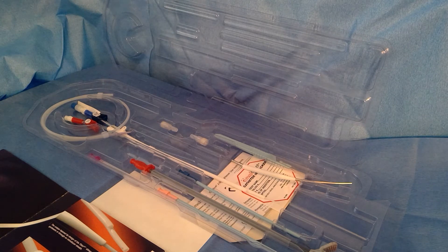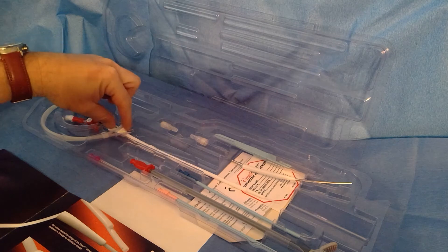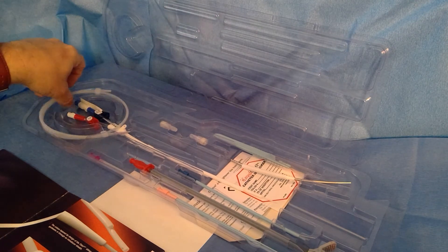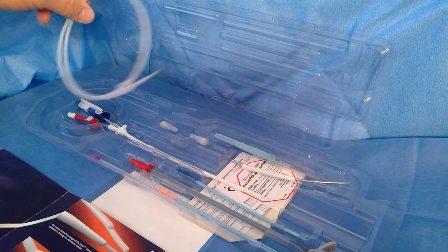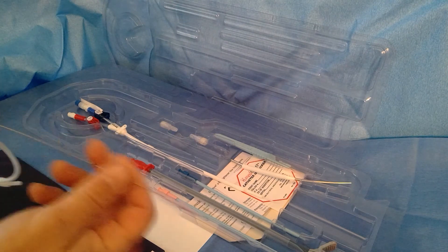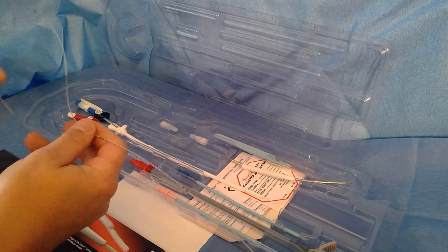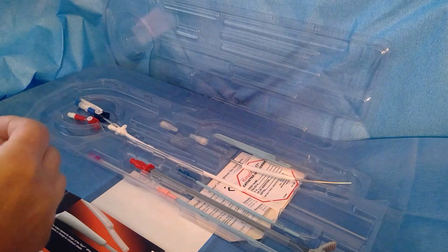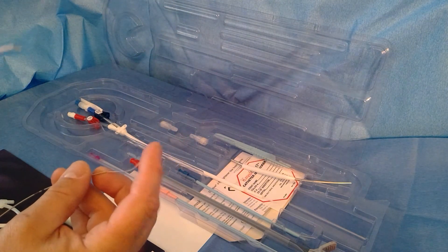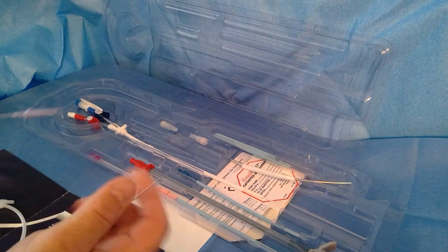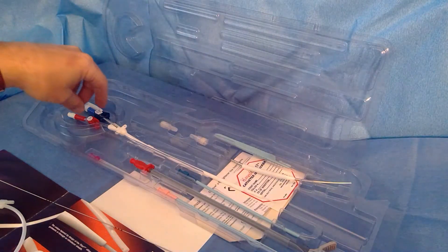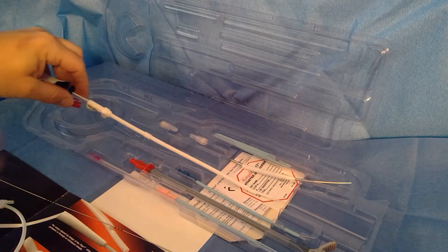This particular catheter is the Titan HD. It comes with things you're probably familiar with. You have a 0.038 J wire here with markers on it if you use those. A lot of people don't, but if you need them they're there. It's also unique in that it has an LLT tip if you like that, or a J tip on the other end if you use that. Most people I guess go with the J tip, but if you need to, you have the LLT on the other side.